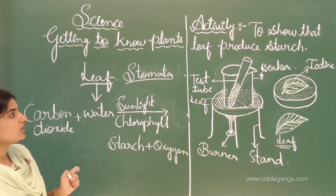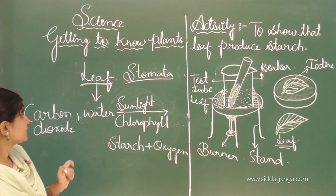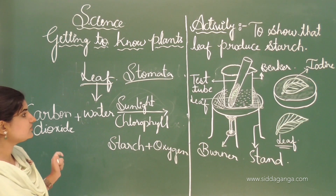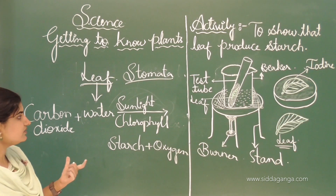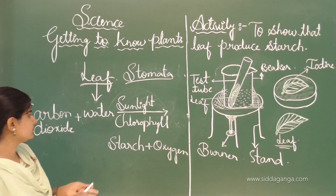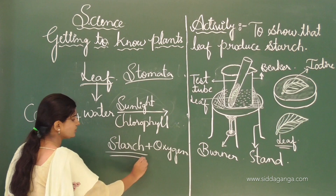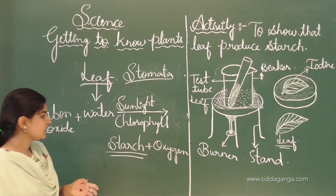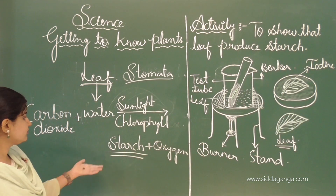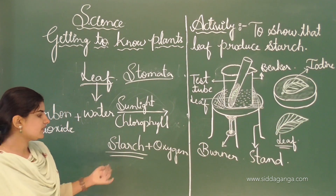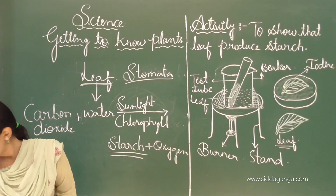This is how we can say that the leaf contains starch — by the process of photosynthesis, starch is produced by the leaf.